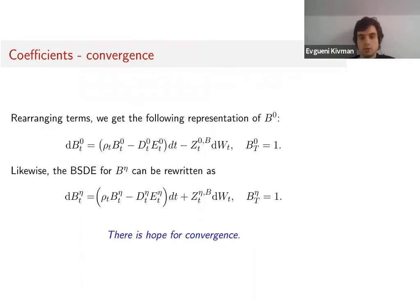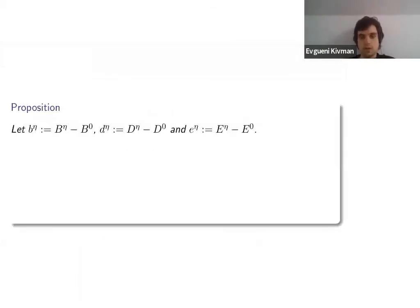If we rearrange terms, we get the following representation of B⁰. Originally we only had B⁰ on the right-hand side of the BSDE, but now we can also put D⁰ and E⁰ there. Then we see that we have similar BSDEs for B⁰ and B^η. This is what we hope for—convergence.